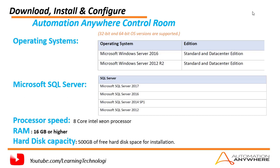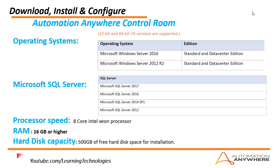These are all the hardware requirements for the Automation Anywhere Control Room. For the operating system, we require Windows Server 2016 or Windows Server 2012 R2. Based on that, we install Microsoft SQL Server. The supported versions are Microsoft SQL Server 2012, 2014 SP1, 2016, or 2017. We have already installed Microsoft SQL Server 2012 on our system.